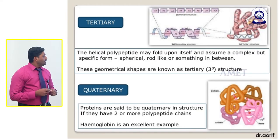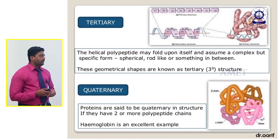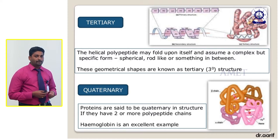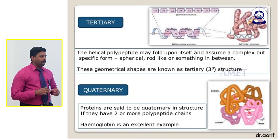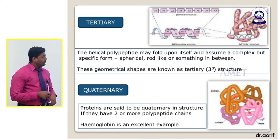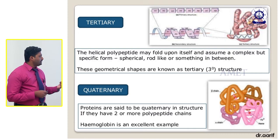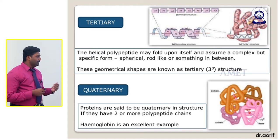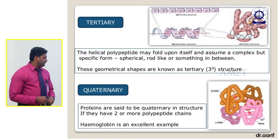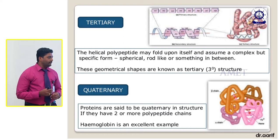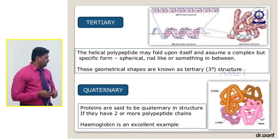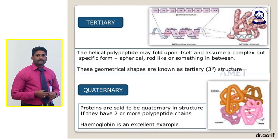The tertiary structure is a complicated structure. The helical polypeptide chain folds upon itself and assumes a complex structure in a spherical, rod-like, or in-between shape. These geometrical shapes are known as tertiary structures and have three-dimensional forms. The quaternary structure applies to proteins that have two or more polypeptide chains. A perfect example of quaternary structure is hemoglobin.